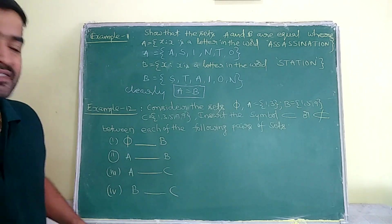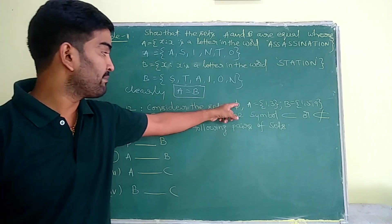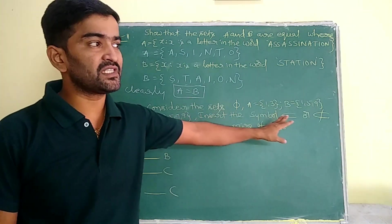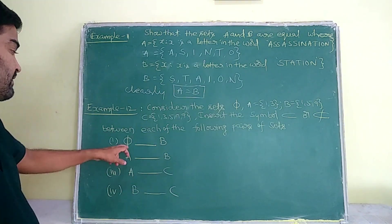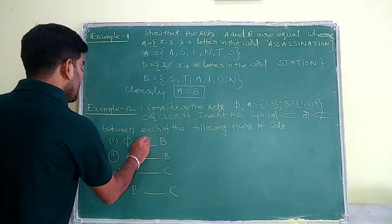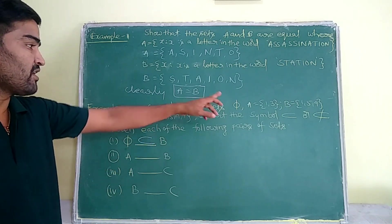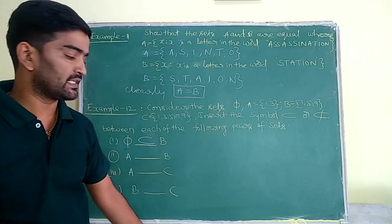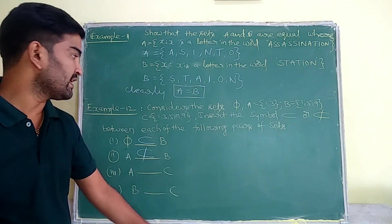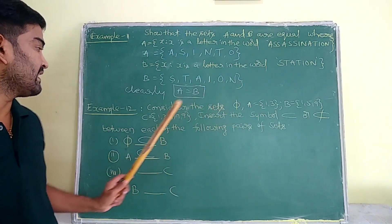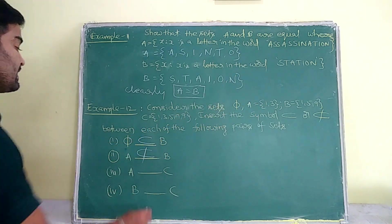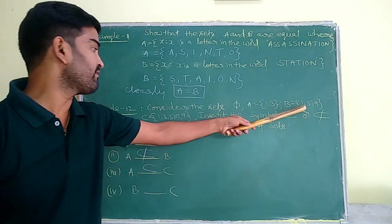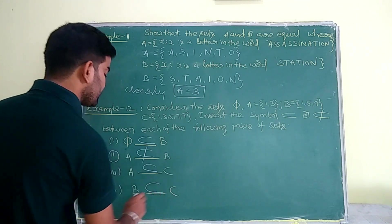Example 12: Consider the sets: empty set, A = {1, 3}, B = {1, 5, 9}, C = {1, 3, 5, 7, 9}. Insert the subset or not-subset symbol between each pair. The empty set is a subset of all sets. Is A a subset of B? A has 1 and 3; 3 is not in B, so A is not a subset of B. Is A a subset of C? Elements 1 and 3 are both in C, so A ⊆ C. Is B a subset of C? Elements 1, 5, 9 are all in C, so B ⊆ C.